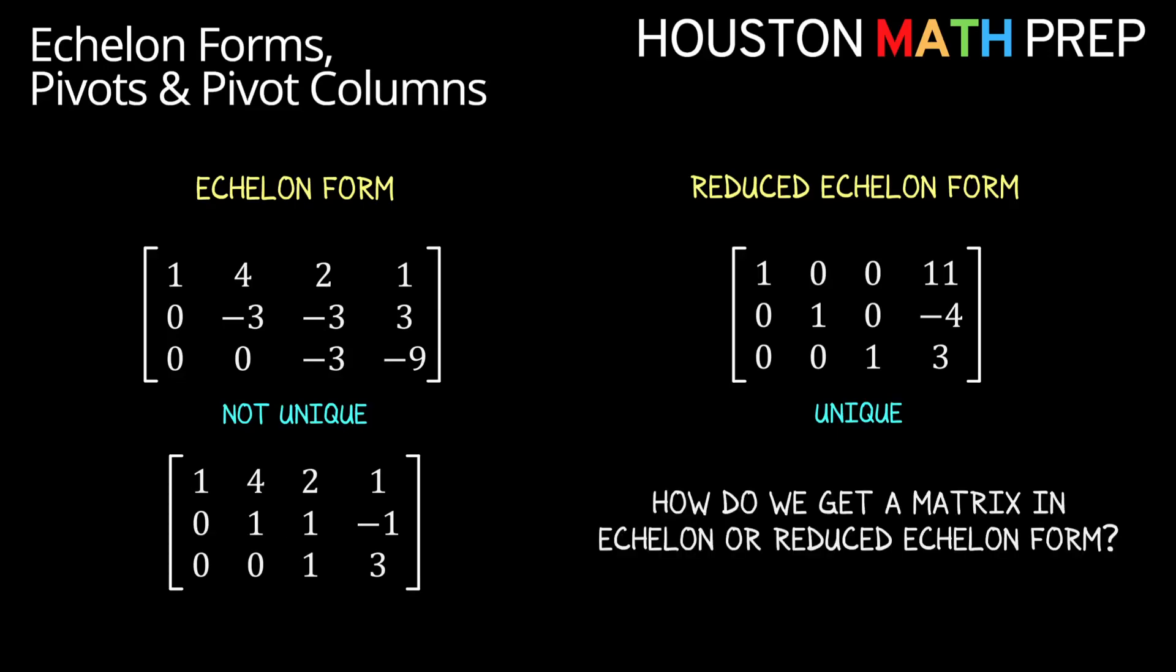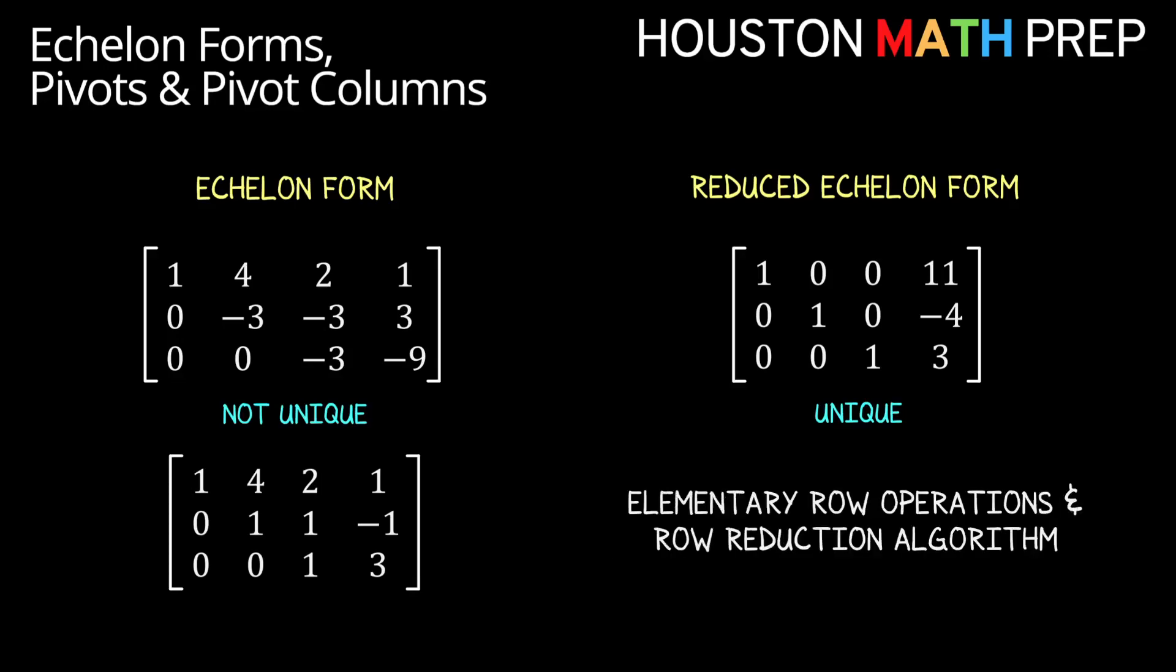Now that we know about pivots and echelon forms, of course the next question is how do we turn our matrix into one of these forms? And our next videos in our linear algebra series on elementary row operations and the row reduction algorithm tell us exactly that. Thanks for watching. We'll see you in the next video.